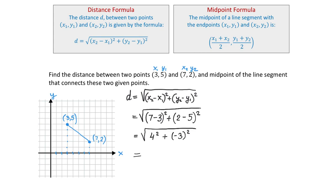That equals: the square root of 4 squared, which is 16 (that is 4 times 4). Negative 3 squared is 9, because negative 3 times negative 3 equals 9. And 16 plus 9 is 25. The square root of 25 equals 5. So we can say that the distance between these two points is 5 units.